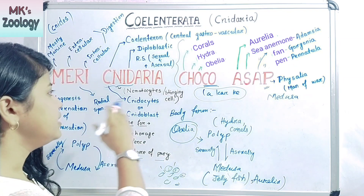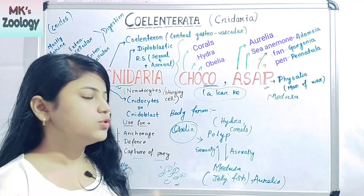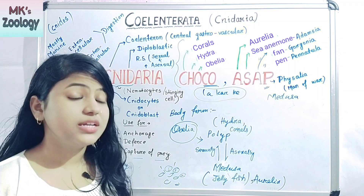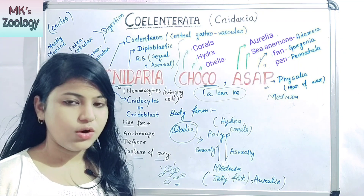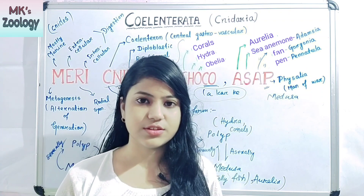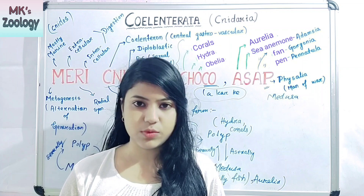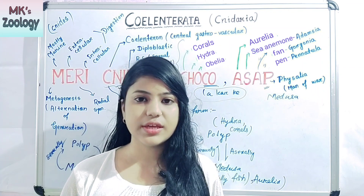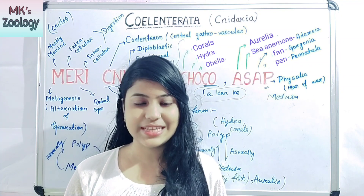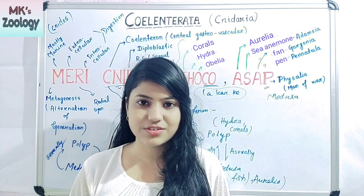So the short trick is: 'Meri Cnidaria choko laa karke do, as soon as possible.' This covers all characteristics and examples of phylum Coelenterata or phylum Cnidaria. I hope you are clear with the concept. If you have any doubts, please feel free to ask in the comment box. In the next video, I will talk about phylum Ctenophora with its short trick. If you like this video, please hit the like button, subscribe to my channel, and share with your friends.